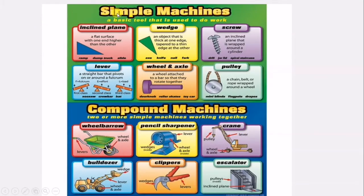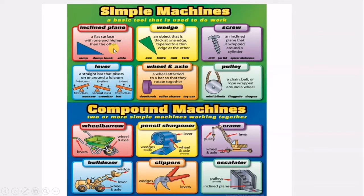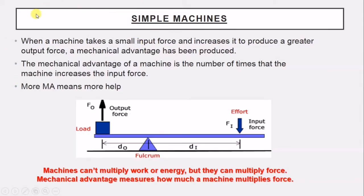Here is also about simple machines and compound machines — a brief definition for each one. We are not going to explain each one in detail in this lesson. The difference between simple and compound machines: compound machines — like a wheelbarrow — are made of a combination of a lever and wheel and axle. Pencil sharpener, crane, bulldozer, clippers, escalators — all compound machines, made by two, three, or more simple machines combined.